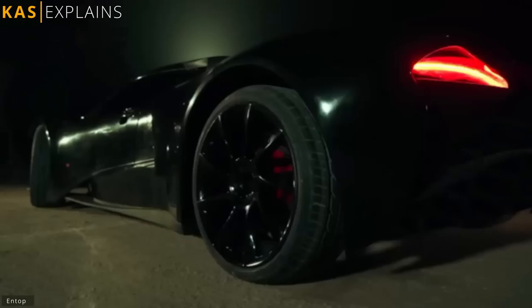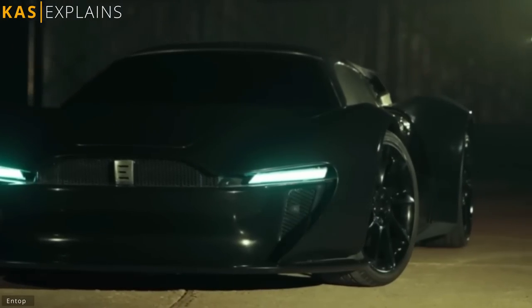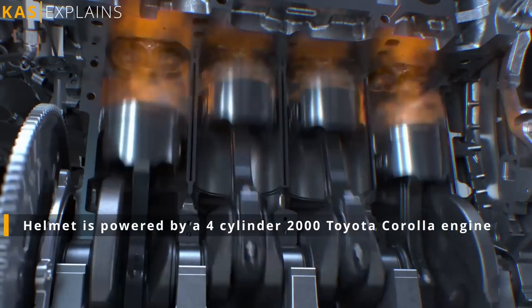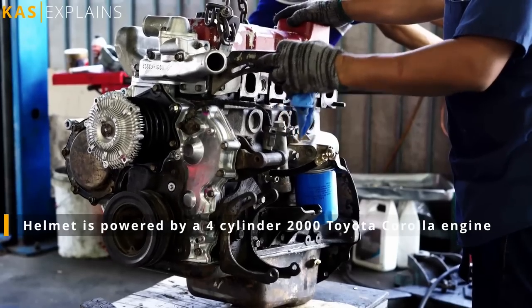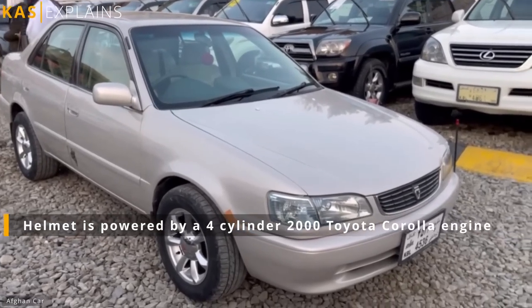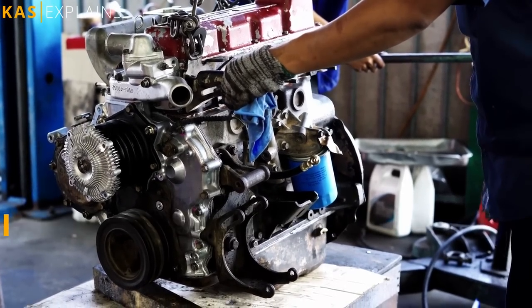Well, not much is known about the specifics of the car, but what we know so far is that under the hood, there's a four-cylinder Toyota Corolla engine. Yep, you heard that right. It's a modified engine from a humble 2000 Toyota Corolla, which has been calibrated to handle higher speeds.